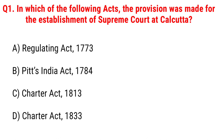The first question: in which of the following acts was the provision made for the establishment of the Supreme Court at Kolkata? Option A, Regulating Act 1773; B, Pitt's India Act 1784; C, Charter Act 1813; D, Charter Act 1833. The right answer is Option A, Regulating Act 1773.